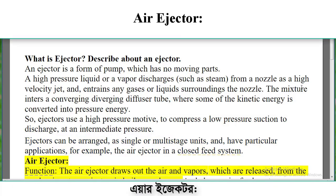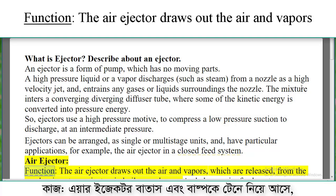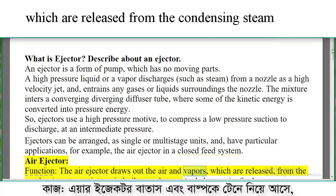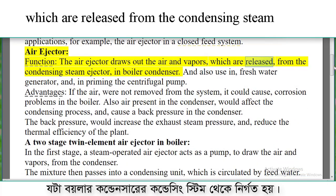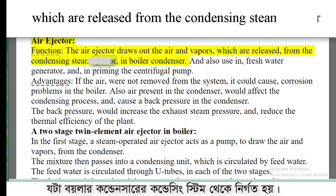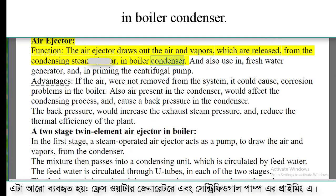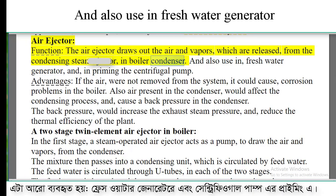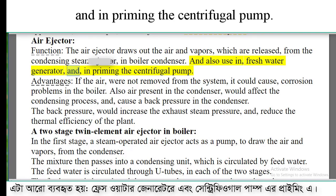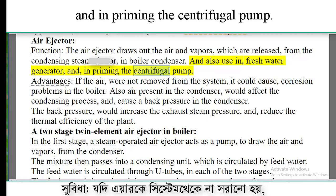Air ejector function: the air ejector draws out the air and vapors which are released from the condensing steam in the boiler condenser. It is also used in the fresh water generator and in priming the centrifugal pump.